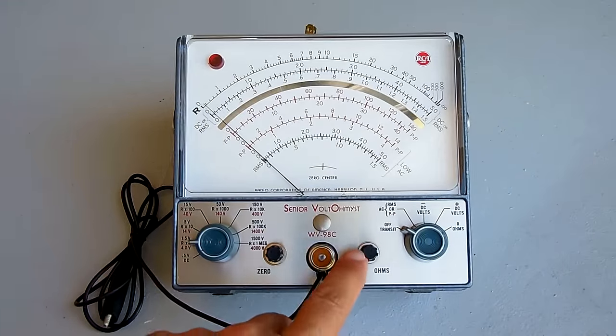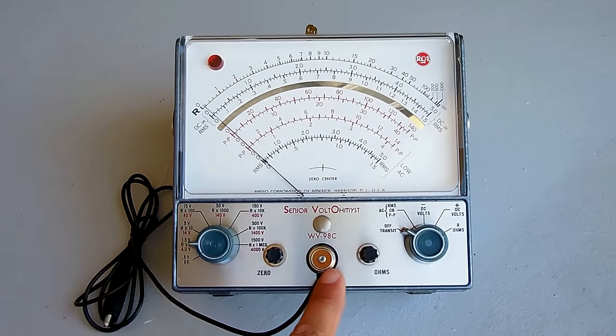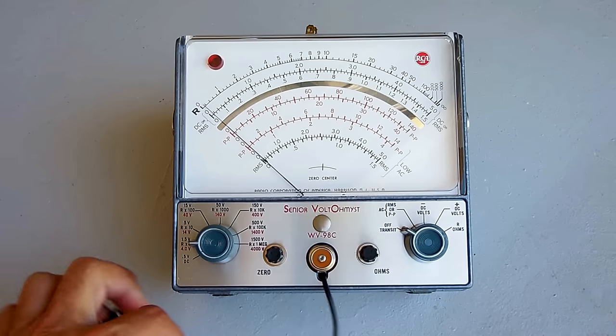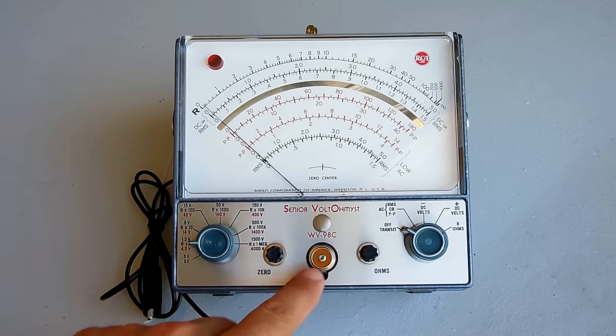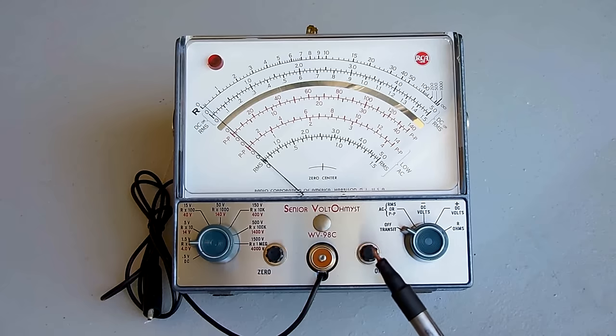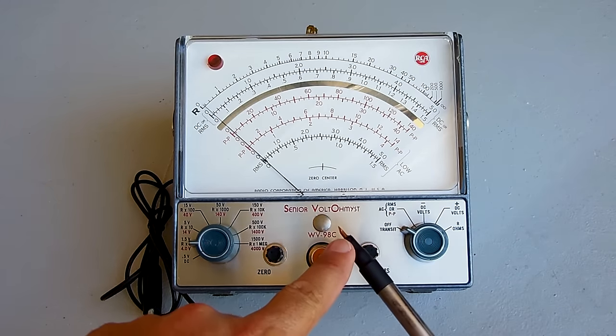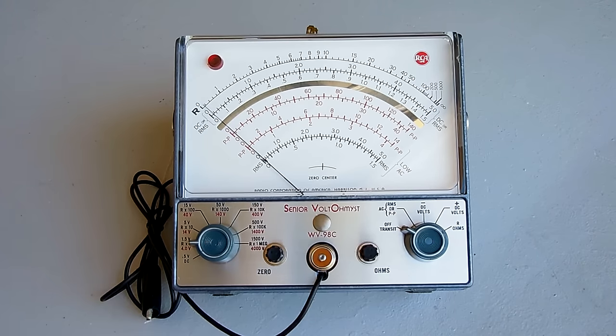Now the cable for the probe screws on right here. This part right here with the threads that I'm pointing to has continuity with this wire coming out of the box. So these two are the same. The center right here is what connects to the probe tip right over here. Now let me show you what I had to do because I did have to buy a separate cable with a connector to make the probe.